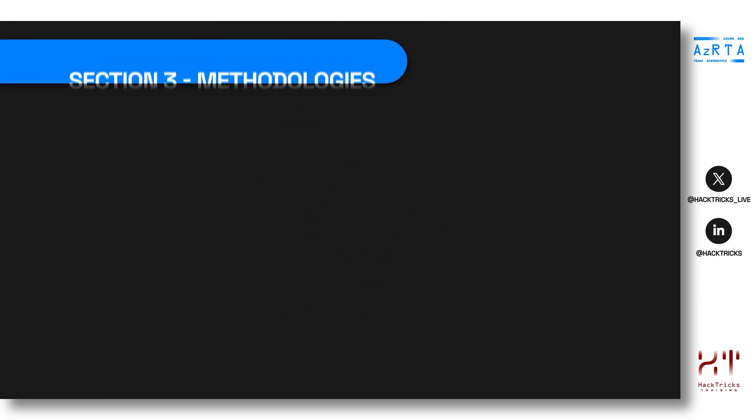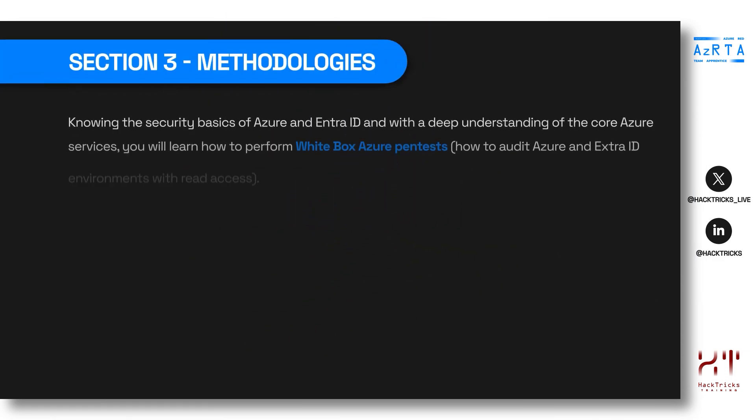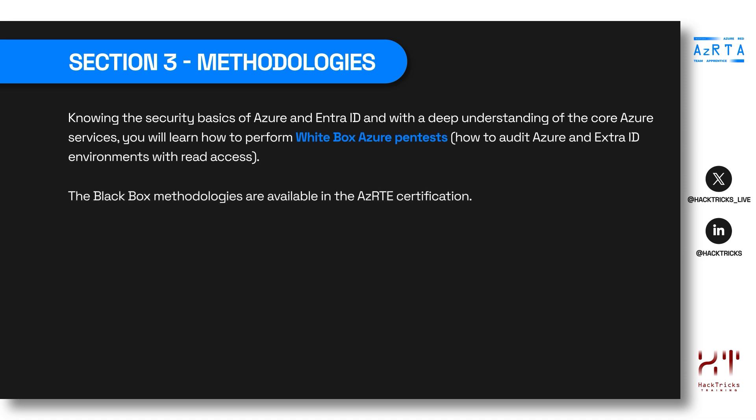The third section is called Methodologies. Knowing the security basics of Azure and Entra ID, and with a deep understanding of the core Azure services, you will learn how to perform white box Azure pen tests — how to audit Azure and Entra ID environments having read access. The black box methodology is available in the same section in the expert version of this certification. In the apprentice version, we focus on white box Azure pen tests, in order to learn how to find as fast as possible all misconfigurations and vulnerabilities inside an Azure and Entra ID environment where we have read-only access.